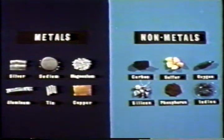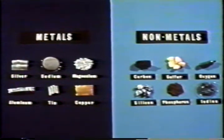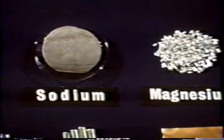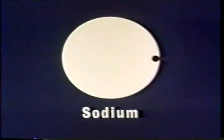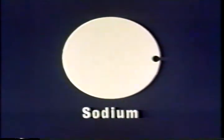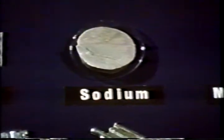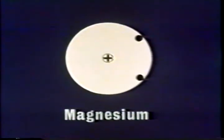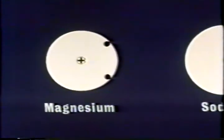Para ver cómo los metales se distinguen de los metaloides, comparemos primero la estructura atómica de dos metales: sodio y magnesio. En la parte exterior del átomo del sodio hay un electrón, el cual está sujeto al átomo por la carga positiva de los protones del núcleo. En el átomo del magnesio hay un electrón más en la parte exterior y más carga positiva en el núcleo, lo que sujeta los electrones más unidos que en el átomo del sodio, haciendo que el átomo del magnesio sea más pequeño.